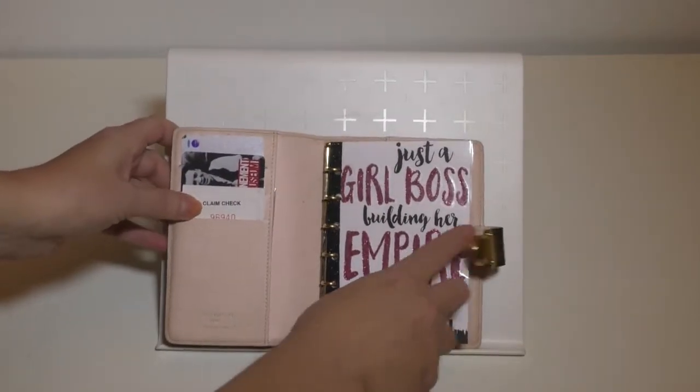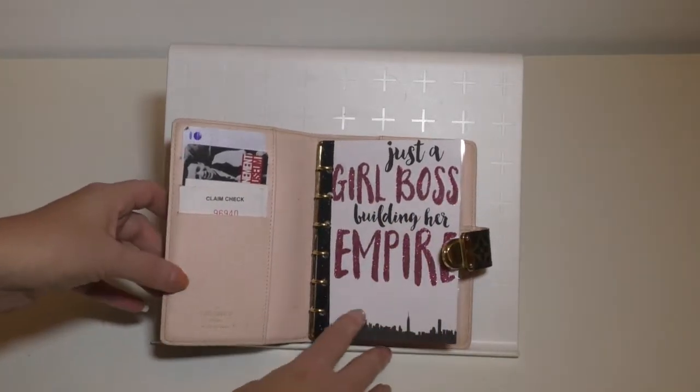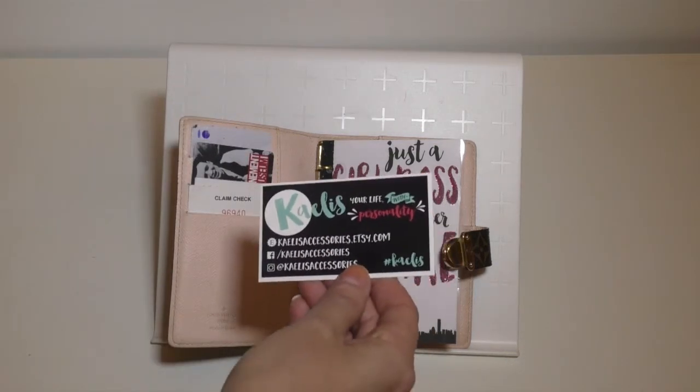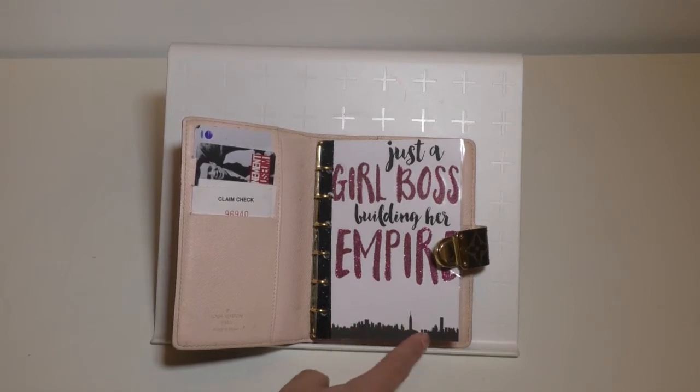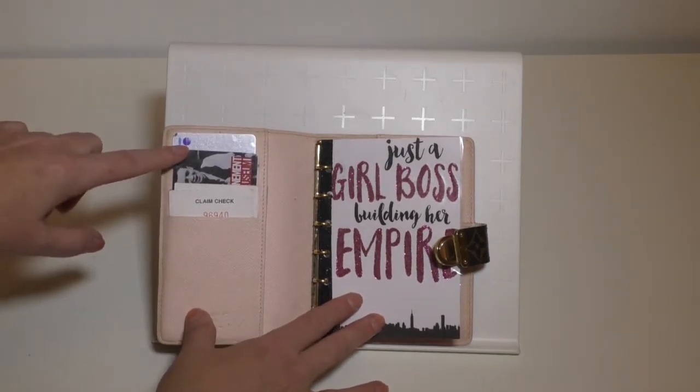I'll just open her up. First off, I have a little dashboard—just a girl boss building her empire. I got this from Kaylee. How cute is this? Thank you for this. I love that it's got this New York City skyline at the bottom. I fly into New York and that area quite a bit.